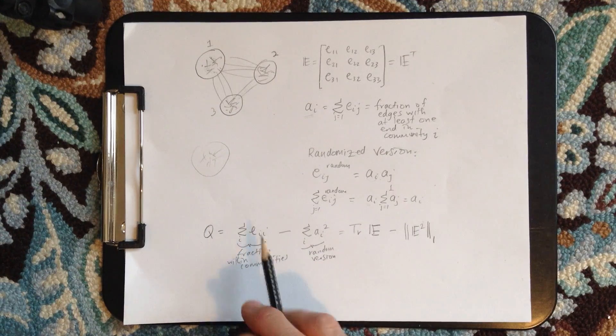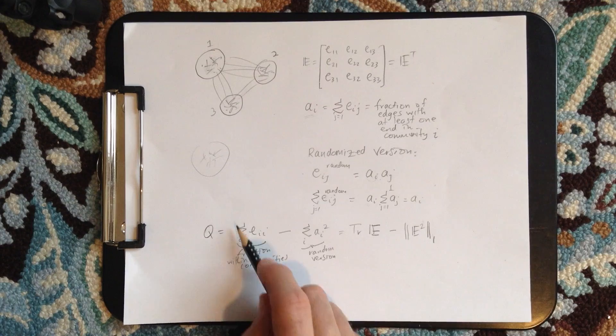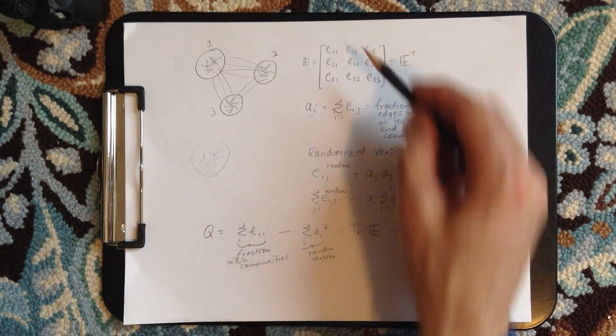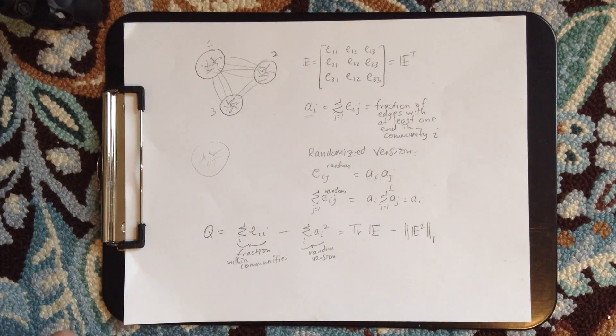So what we're getting to is this. The fraction of edges within communities is going to be actually the trace of E, so it's a sum of EII. So we're going to sum down here. So that's the fraction of all edges that are within communities.